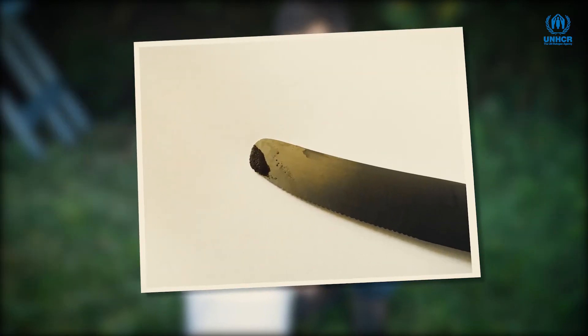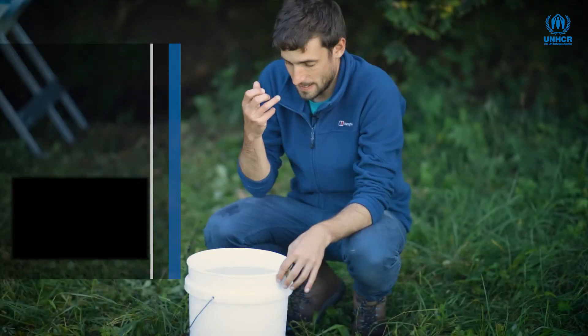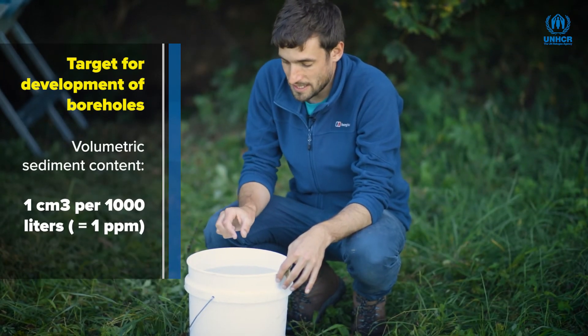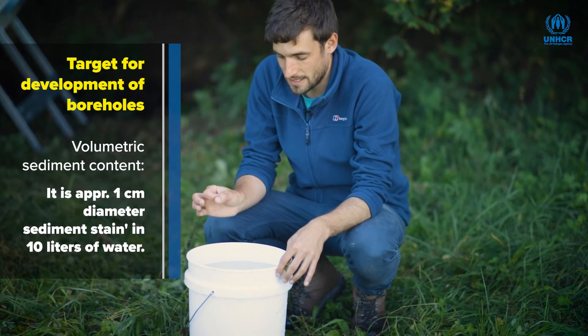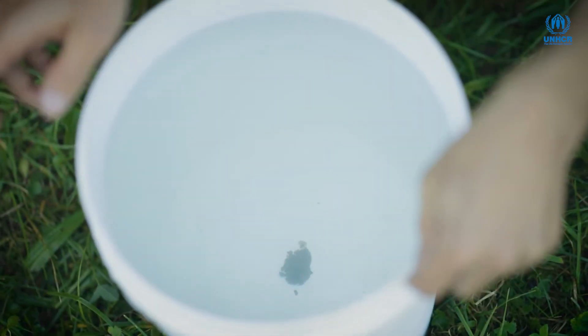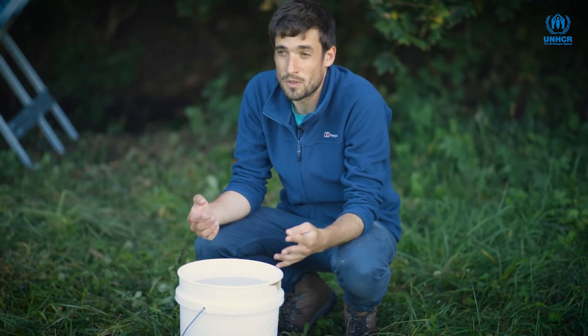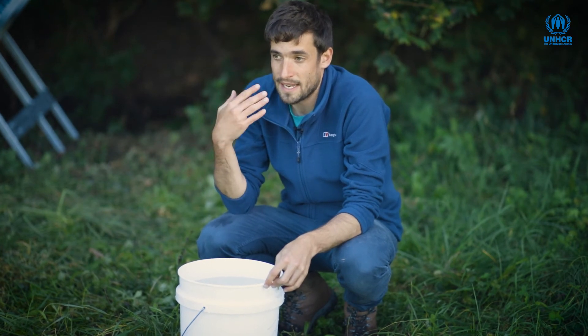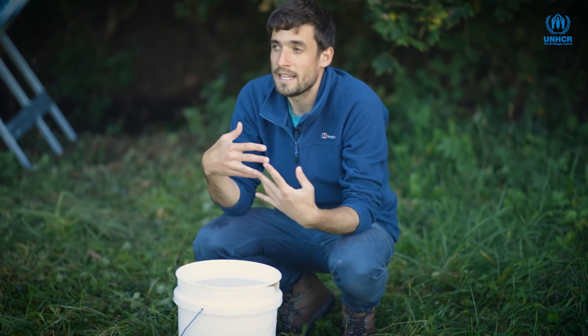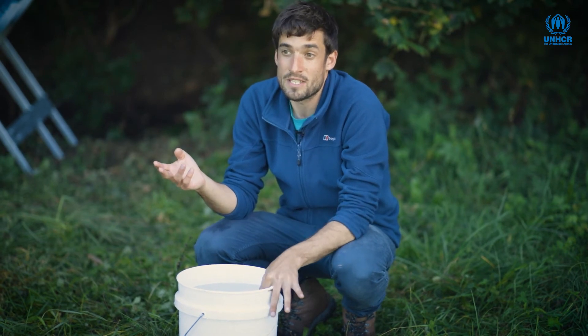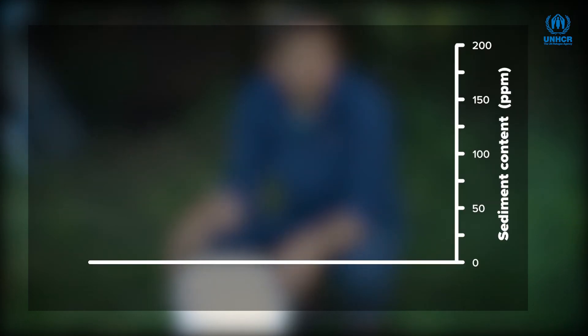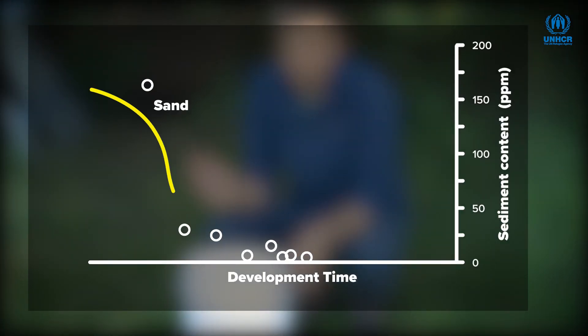We are looking for less than one centimetre cubed in one metre cubed of water, which corresponds approximately to a knife tip of sediment in a 10-litre bucket. What we have here is a circle of sediment in the bottom of the bucket that's about two or three centimetres in diameter. That's indicating that we have too much sediment in the water, which could potentially cause problems with pumping equipment — pipes will be exposed to increased abrasion, which could lead to premature breakdown of the pumping equipment. Carry out one measurement every 15 minutes during development and plot the results against the discharge rate.